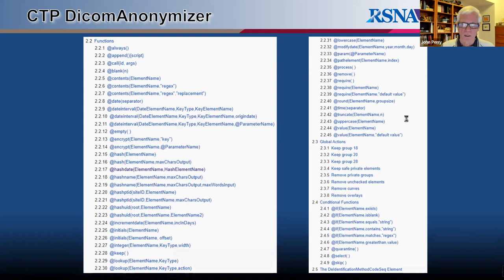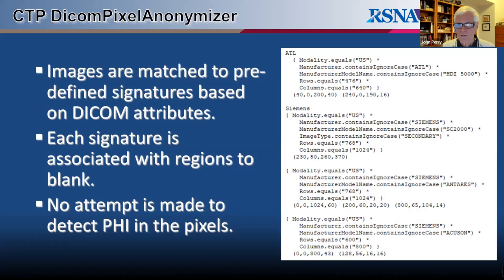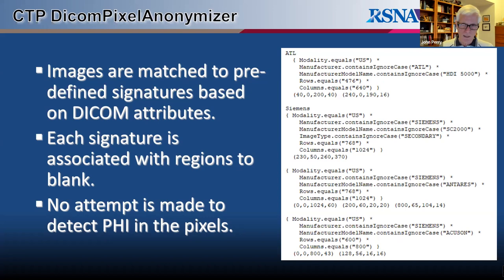The DICOM anonymizer only de-identifies the non-pixel elements in a data object. To blank out PHI that may be burned into pixels, there is a pipeline stage called the DICOM Pixel Anonymizer. Rather than trying to find PHI in the pixels directly, it has a library of known image types and modality image types known to contain PHI in certain regions. When it receives a DICOM object, it works through the library trying to match the object to a signature, and if it finds a match, it blanks the regions associated with that signature.